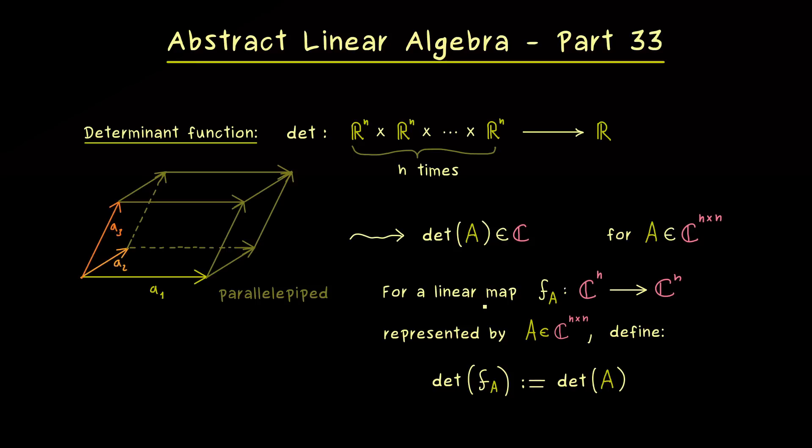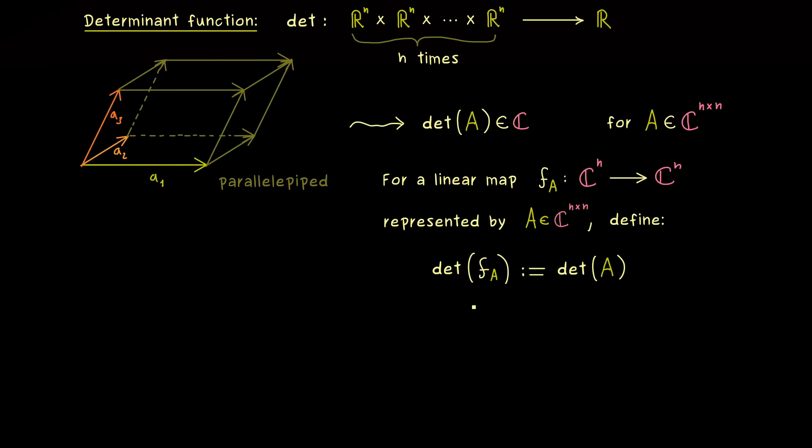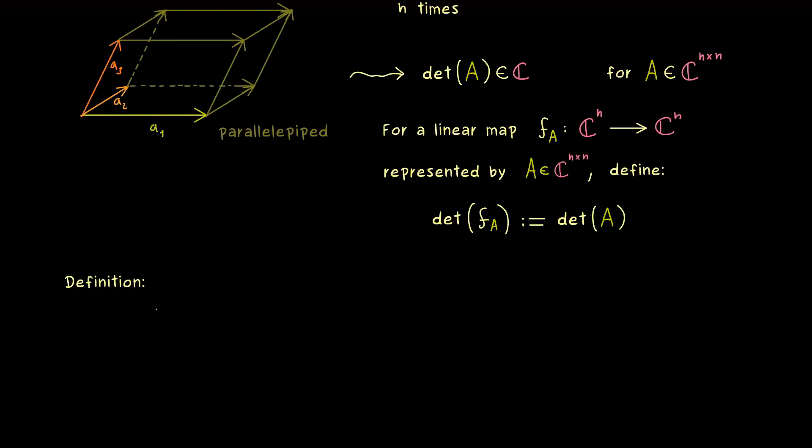So this is what we already know from the linear algebra course. But now the natural question is, how can we extend this definition to general linear maps? And there you might already say, also for abstract linear maps, we have matrix representations we can use. And this is exactly what we will do to define the determinant in the abstract case.